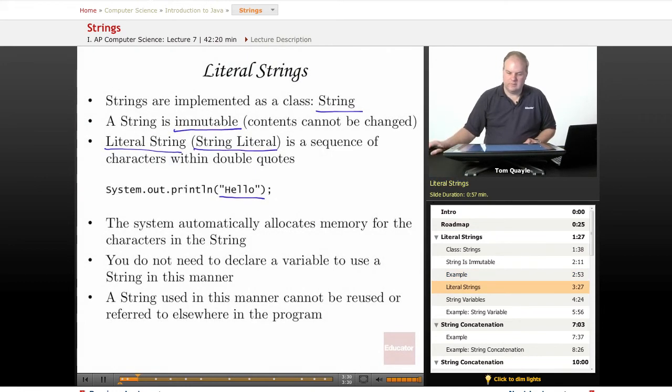When you use a string literal, it is not necessary to declare a variable or to allocate memory for the string. The system automatically allocates memory for the characters in the string. That's all done behind the scenes and you don't need to do anything special to make that happen. However, with the simplicity comes the limitation that a string that is used in this manner cannot be reused or even referred to later elsewhere in the program. So if you need another string literal, even if it contains the same characters, you need to declare another one if you're going to use it elsewhere in your program. When we talk about string variables next, we'll see how string variables overcome this limitation.